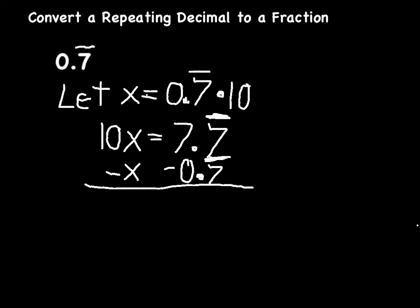On the left-hand side, I have 10x take away x. In other words, I have 10 x's, I take one away, that leaves me with 9x. On the right-hand side, I have 7.7 repeating minus 0.7 repeating. The 0.7 repeating parts are going to cancel each other out, so this is going to be equal to 7.0.